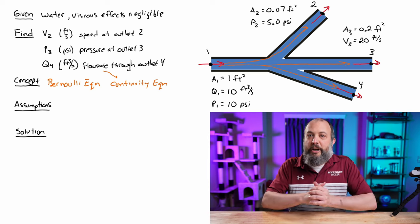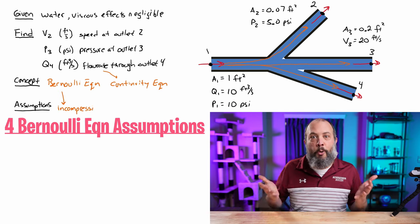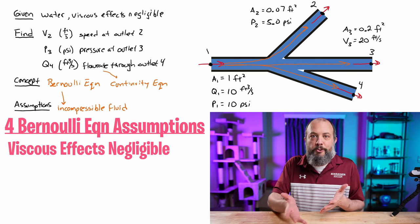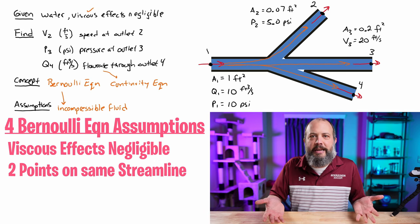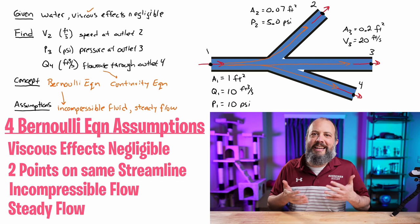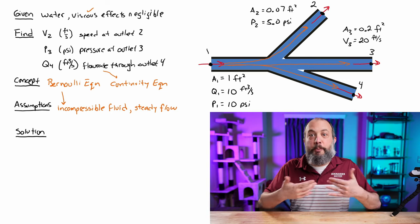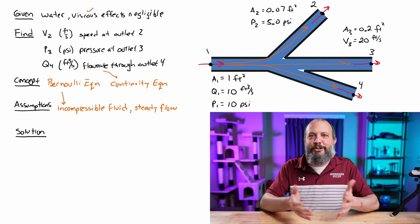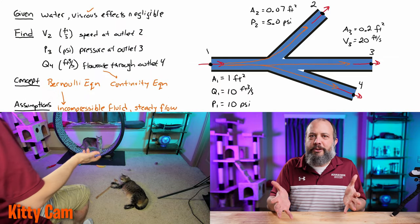So making assumptions for this problem, whenever you're using the Bernoulli equation, there's a standard set of four assumptions that always have to apply. One we were already given that viscous forces could be negligible. The other assumptions are that your fluid is incompressible and that you have steady flow. Incompressible fluid is required because density or specific weight is part of the Bernoulli equation, and this can be assumed to apply for basically all liquids.